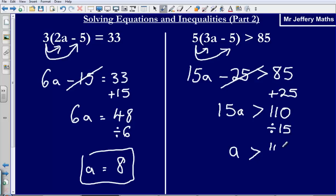So what I could do is I could say that that is 110 divided by 15. And then I could say that that means that a is greater than how many 15's fit into one hundred and ten. That would be 7 and 5 fifteenths.